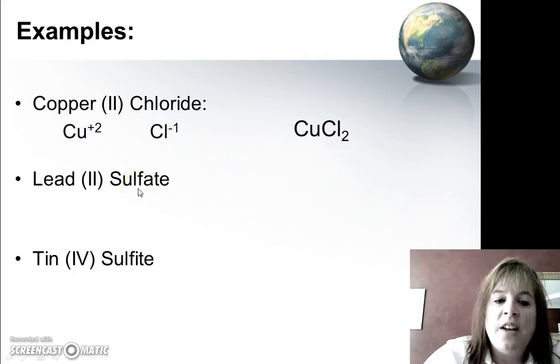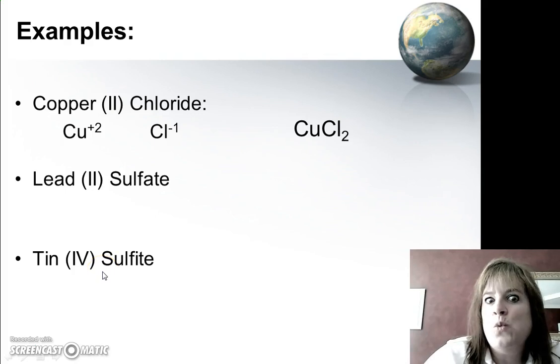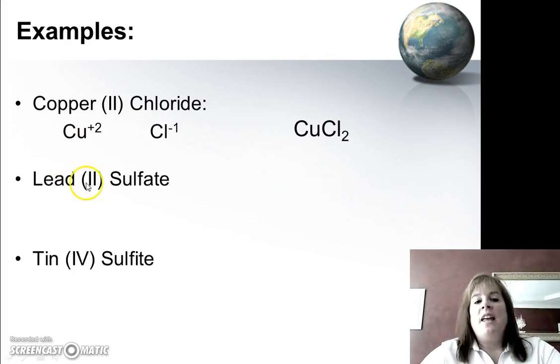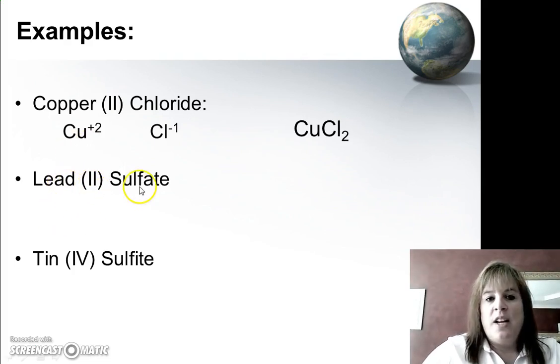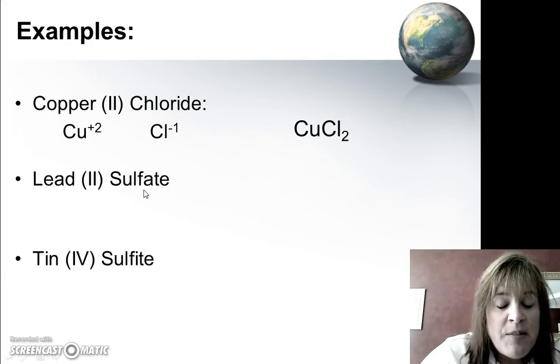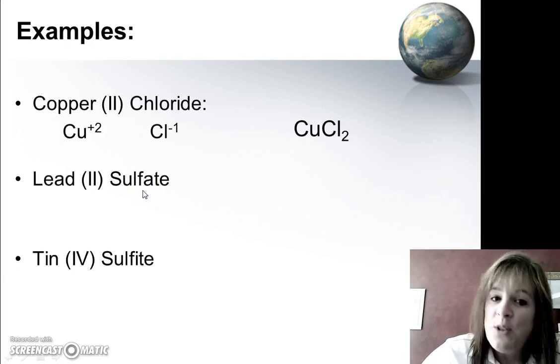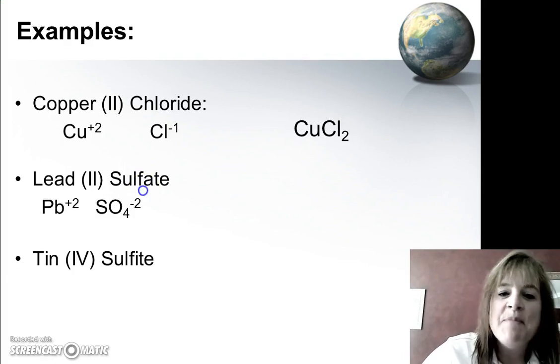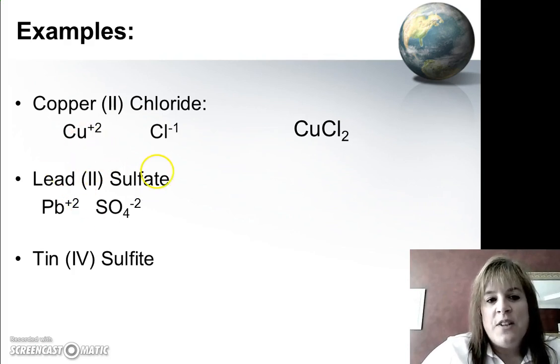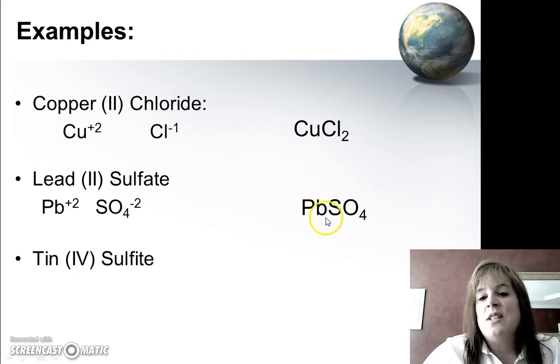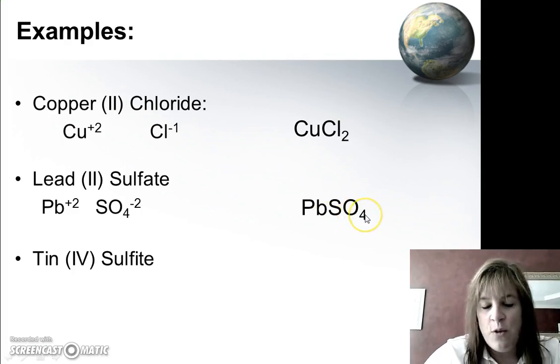All right, you try lead sulfate and tin sulfite. Pause the video, see if you get it right. Well, for lead, this means it's lead plus 2, and you should know that sulfate is minus 2, and if you don't, you really got to work on those polyatomic ions. So we have plus 2 for lead, minus 2 for sulfate, so I can just put them together. No parentheses or multiple atoms needed. So it's lead sulfate, PbSO4.